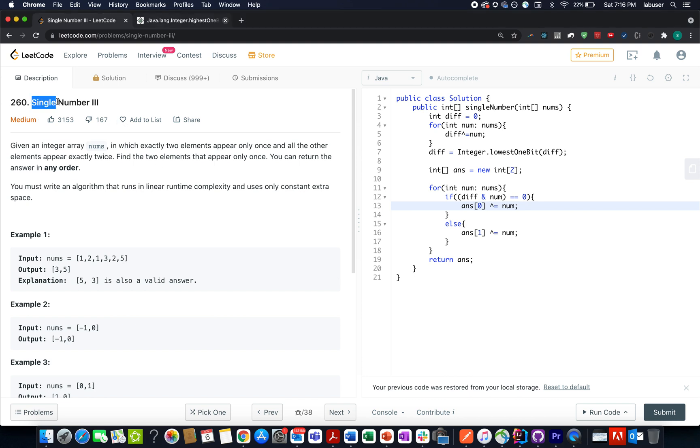Today's question is single number 3. In this question, we are given an array of integers and there are two types of elements that are present in this input array. The first type of elements appear twice in the input array and second type of input elements appear only once. We need to identify the elements that appear only once in the input array.